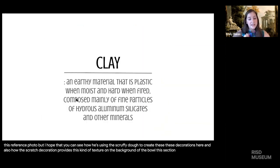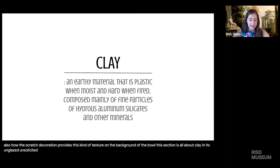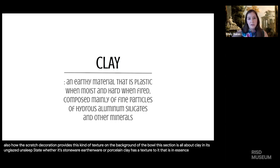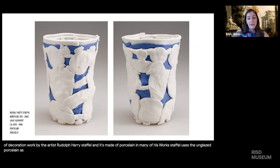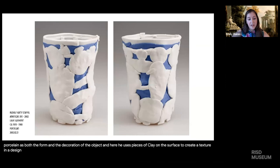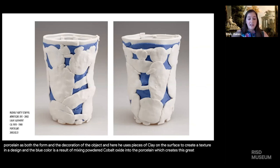This section is all about clay in its unglazed, unslipped state. Whether it's stoneware, earthenware, or porcelain, clay has a texture that is, in essence, its own form of decoration. This is a work by artist Rudolf Harry Staffel, made of porcelain. In many of his works, Staffel uses the unglazed porcelain as both the form and the decoration of the object, using pieces of clay on the surface to create texture and design. The blue color is a result of mixing powdered cobalt oxide into the porcelain, which creates a great contrast in color without using glaze.